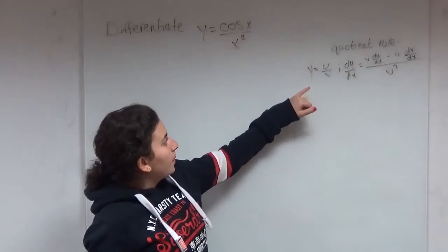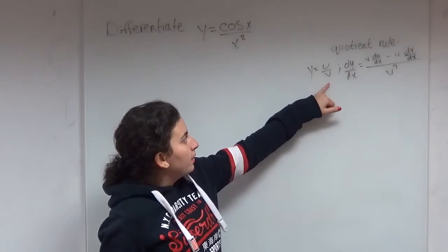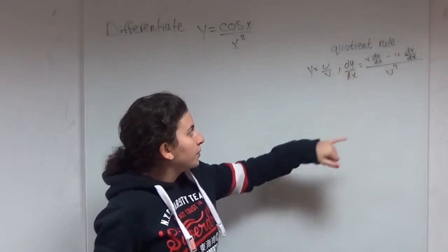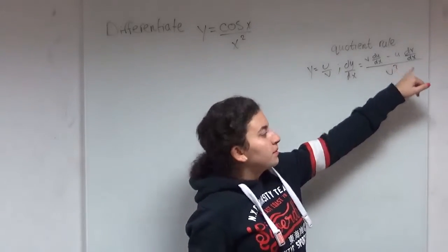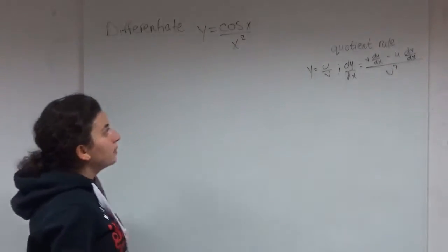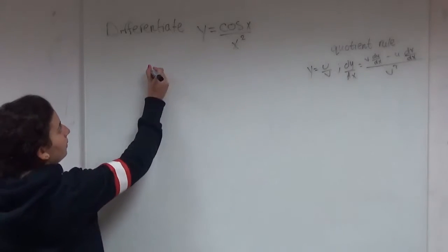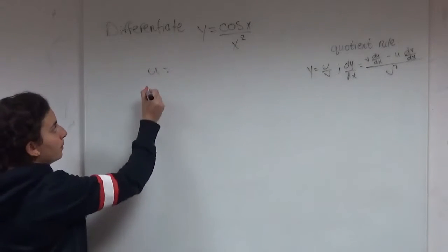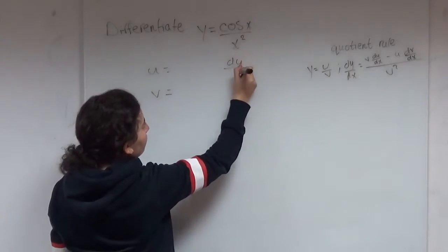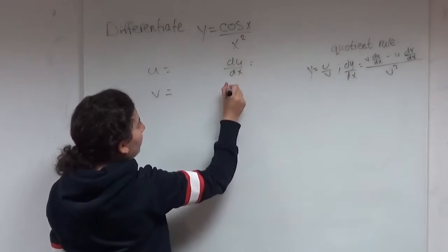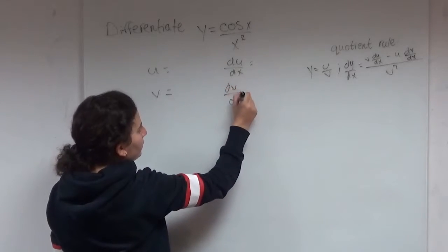So we know that when y is equal to u over v, then dy over dx would be v times the differential of u minus u times the differential of v over v squared. So we immediately know that we need to find our u, our v, our du over dx, and our dv over dx.